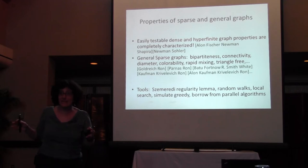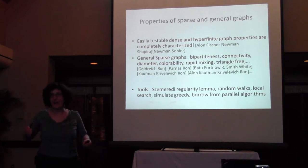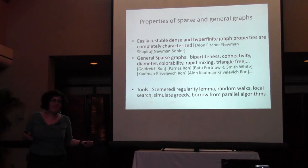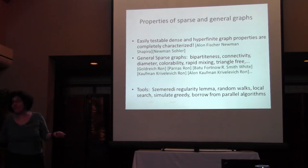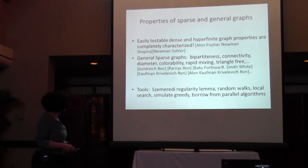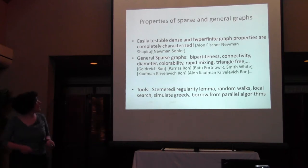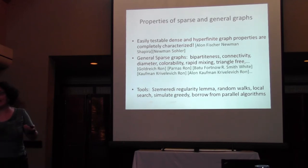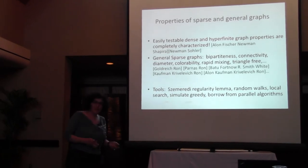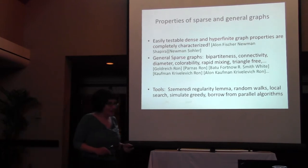Another class of graphs, which is not dense, are hyperfinite graphs — I think of these as the opposite of expanders; they never expand too much. These are sparse graphs and include planar graphs and all kinds of minor-free graphs. All properties of hyperfinite graphs are testable — a very recent result. For general graphs that are not necessarily hyperfinite, there's been a lot of work on various specific properties. Tools applied to these problems include the Szemerédi regularity lemma, random walks, and local search.